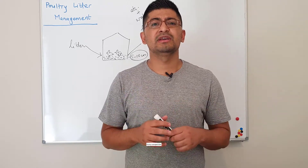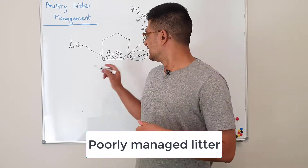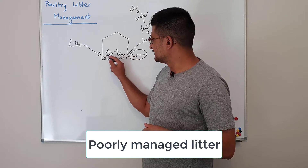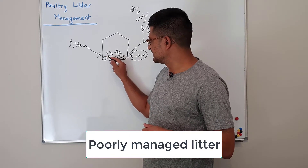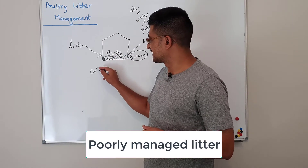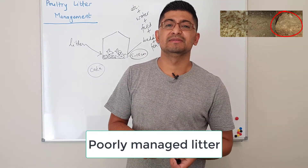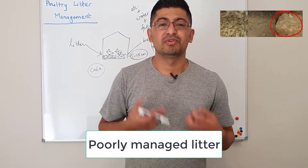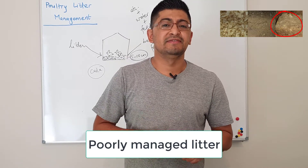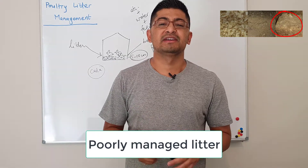If the litter is poorly managed, over time litter becomes crusted and not friable — there might be formation of crust and cake. When there is a formation of cake, there is a lot of ammonia production from that litter, and if there is a lot of ammonia that can have other health and welfare impacts to the chickens.